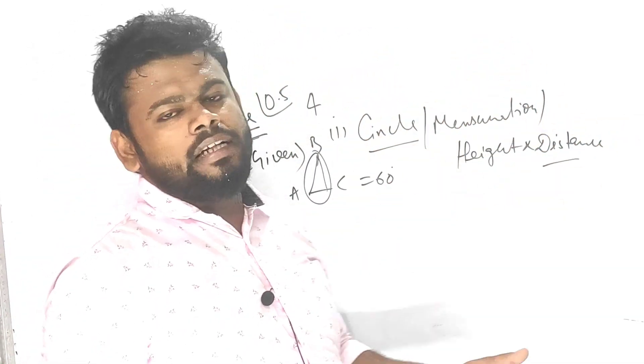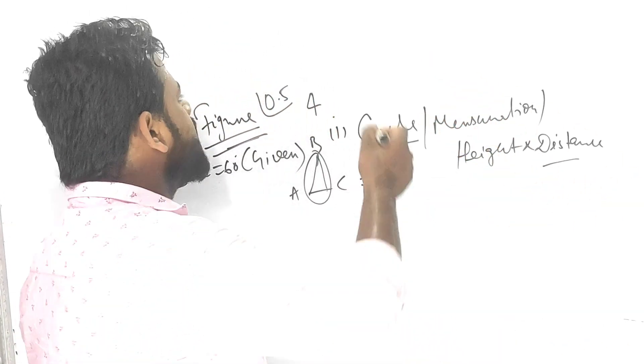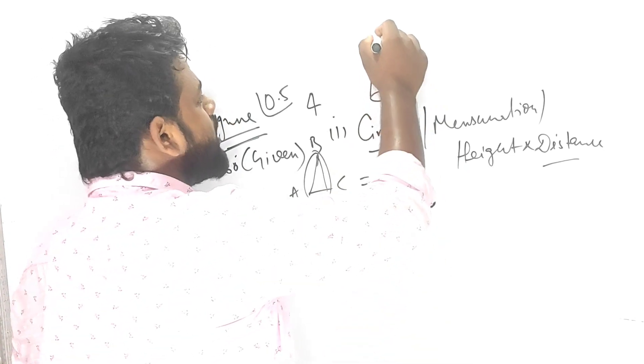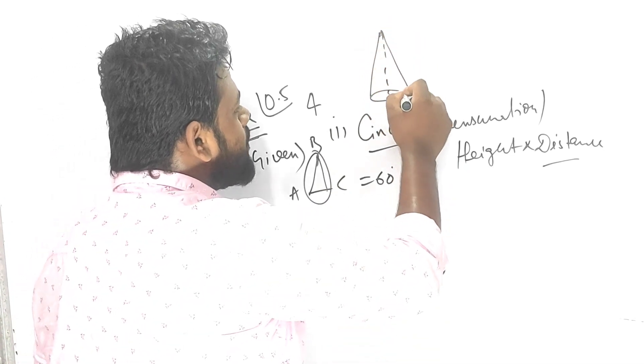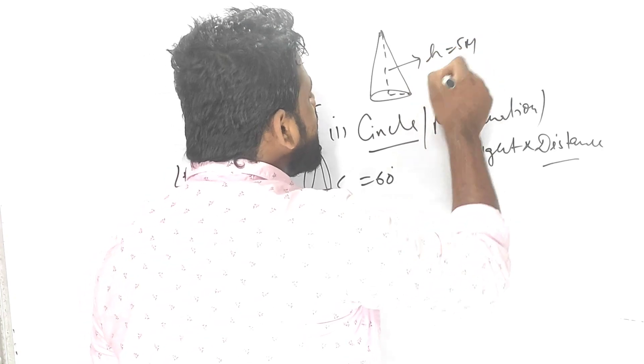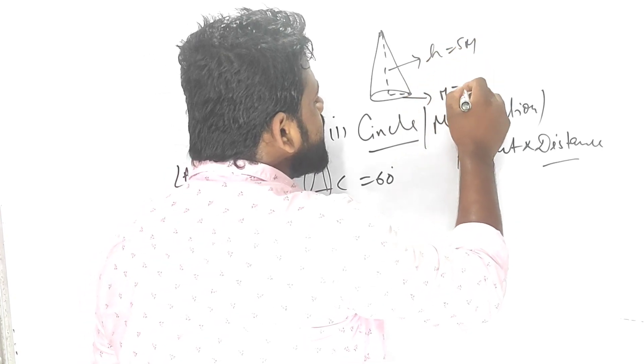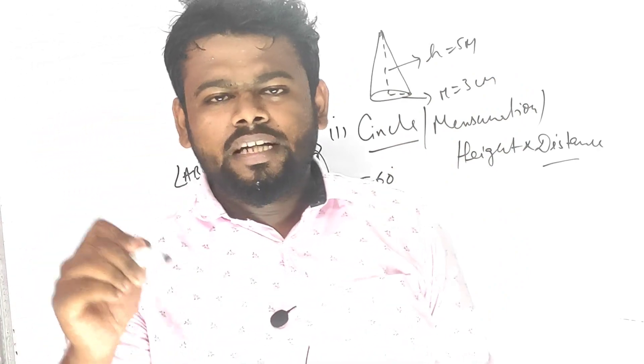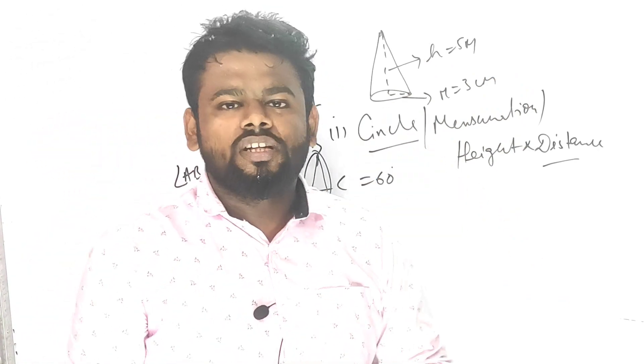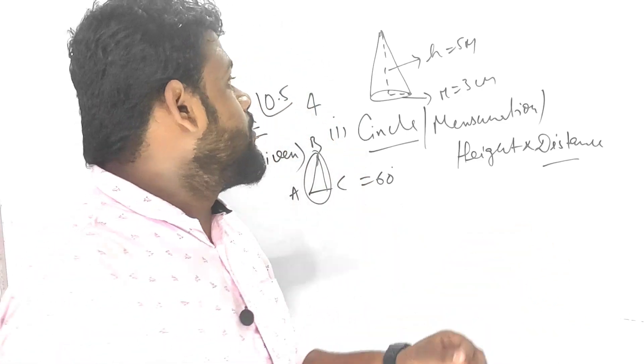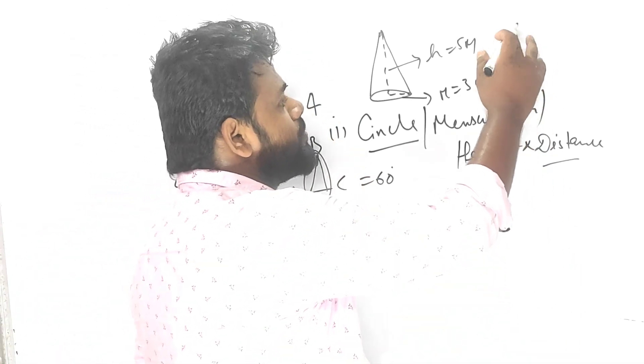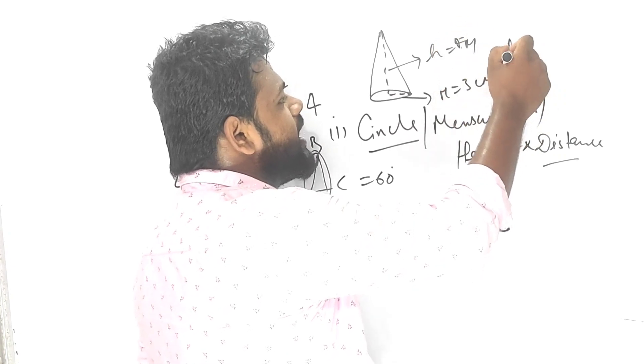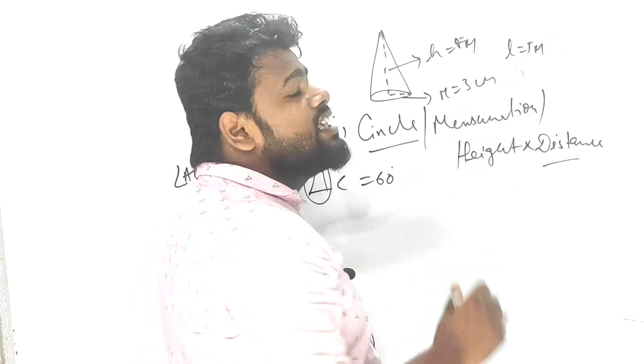For example, in case of mensuration, suppose a cone is given. Simple and steady, you have to draw a cone. Suppose L is asking, and H is given in the question as 5 centimeter, R is 3 centimeter. You have to write it down: H equals 5 meter given, R equals 3 meter given. L equals square root of H squared plus R squared. Somehow I will be getting 4 point... that means I can say L equals 5 meter. So in this way you have to write it down.